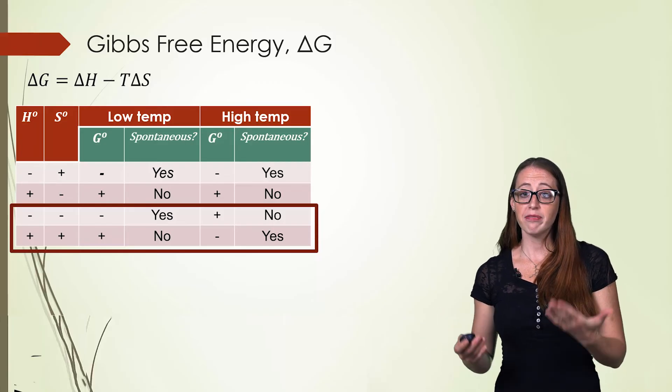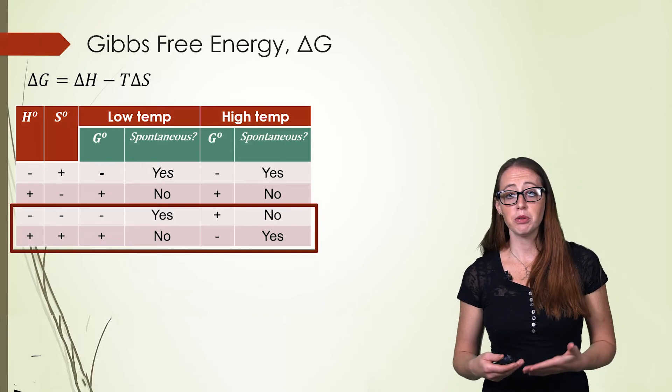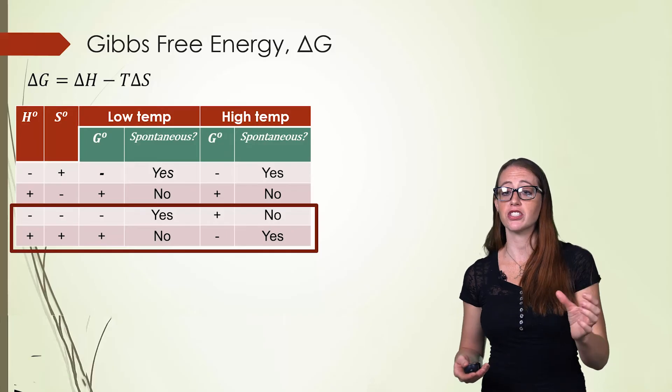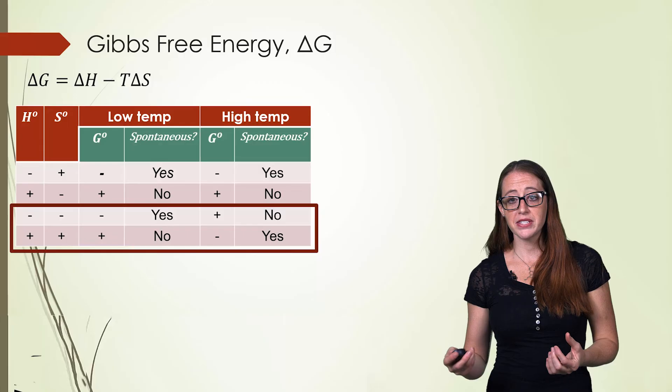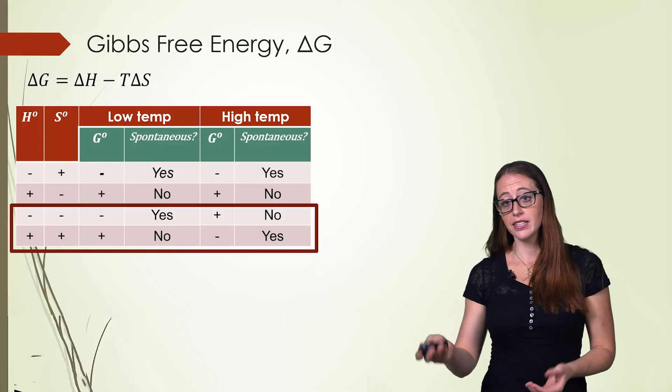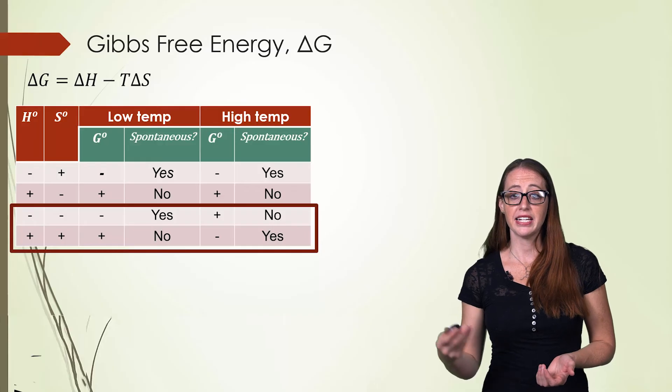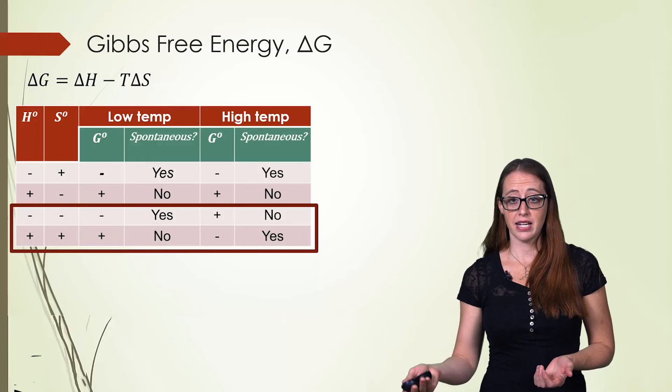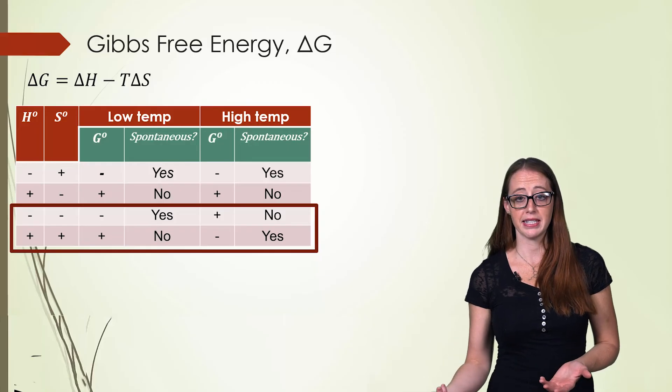So if both ΔH and ΔS are negative, then at low temperatures it will be spontaneous because the first term will dominate. That negative delta H will dominate. But if the temperature gets too much higher, it will unbalance it so that the second term will start to dominate. And if that second term dominates, then ΔG will become positive and therefore non-spontaneous.